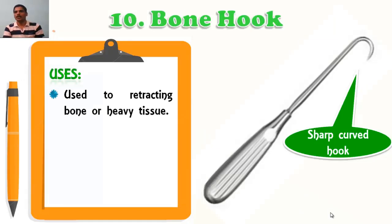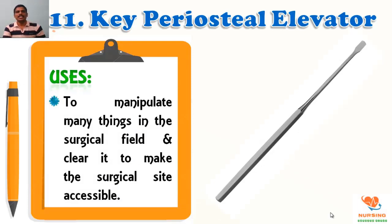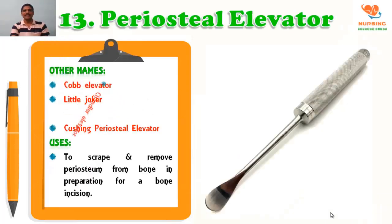Bone hook is used for retracting the bone or heavy tissue. On the head you can see the sharp curved hook. Do not make confusion between the finger hook retractor and the bone hook. Keep periosteal elevator is used to manipulate many things in the surgical field and to make the surgical site easily accessible.